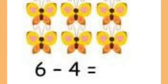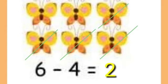So we want to cancel the pictures — 4. 1, 2, 3, 4. Remaining counted: 1, 2. So the answer is 2. 6 minus 4 equal to 2.